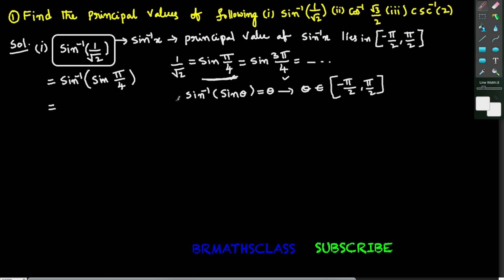Sin inverse of sin theta equals theta, and this holds good only when theta belongs to the closed interval minus pi by 2 comma pi by 2. Observe this result — this pi by 4 belongs to the closed interval minus pi by 2 comma pi by 2. So sin inverse of sin pi by 4 we can write as pi by 4. Therefore the principal value of sin inverse of 1 by root 2 is pi by 4.